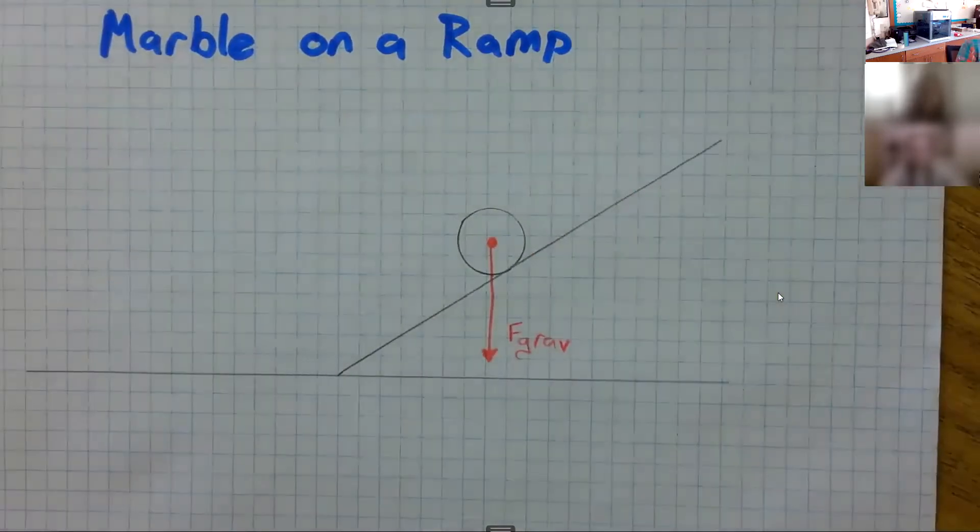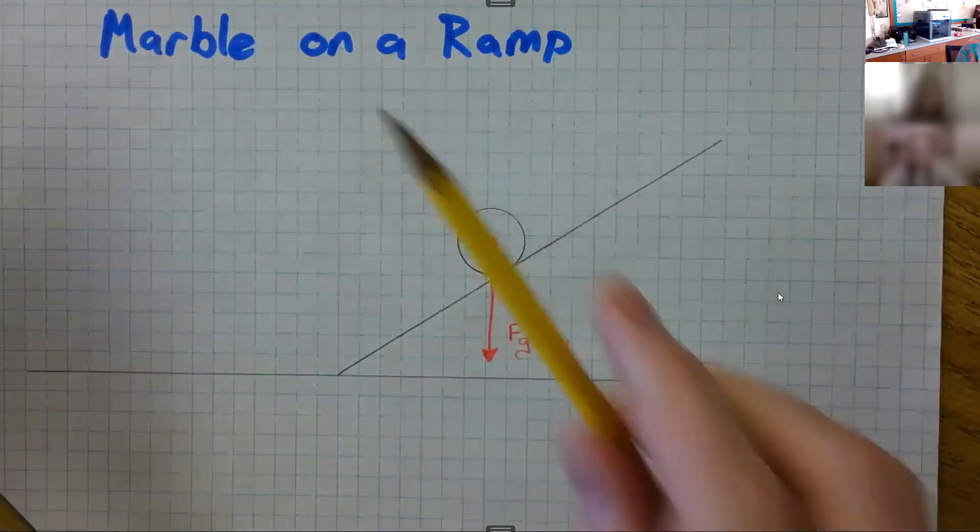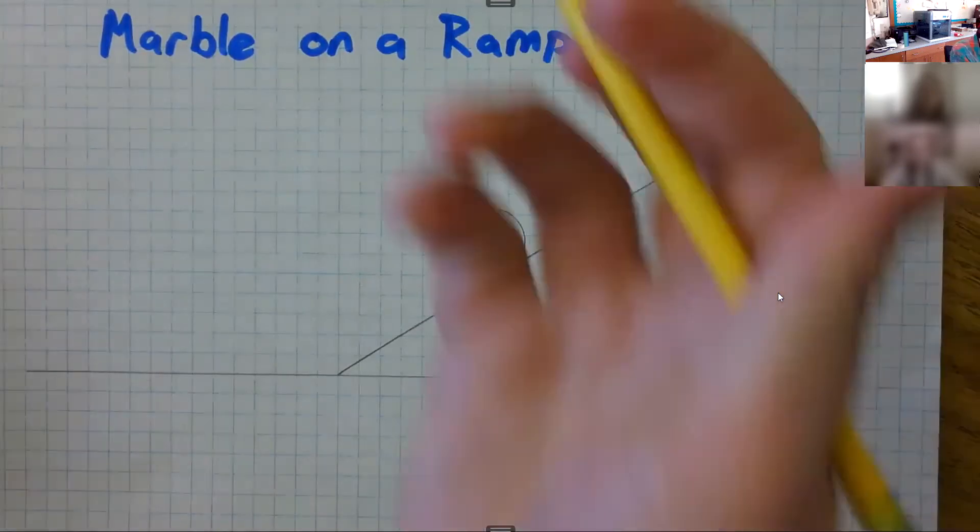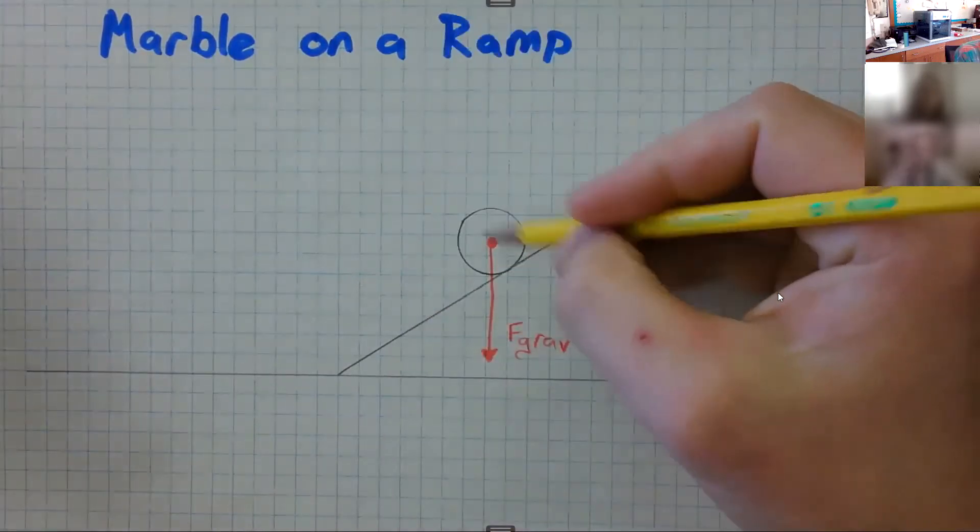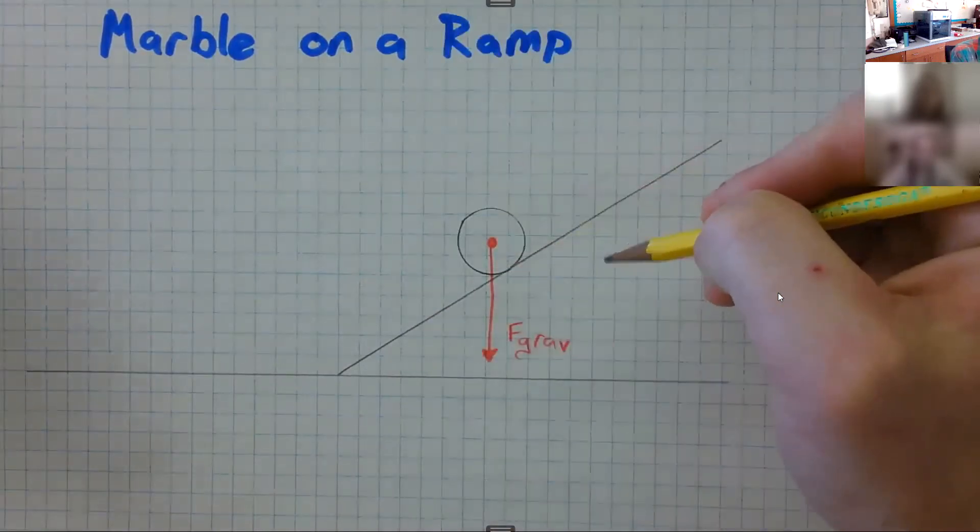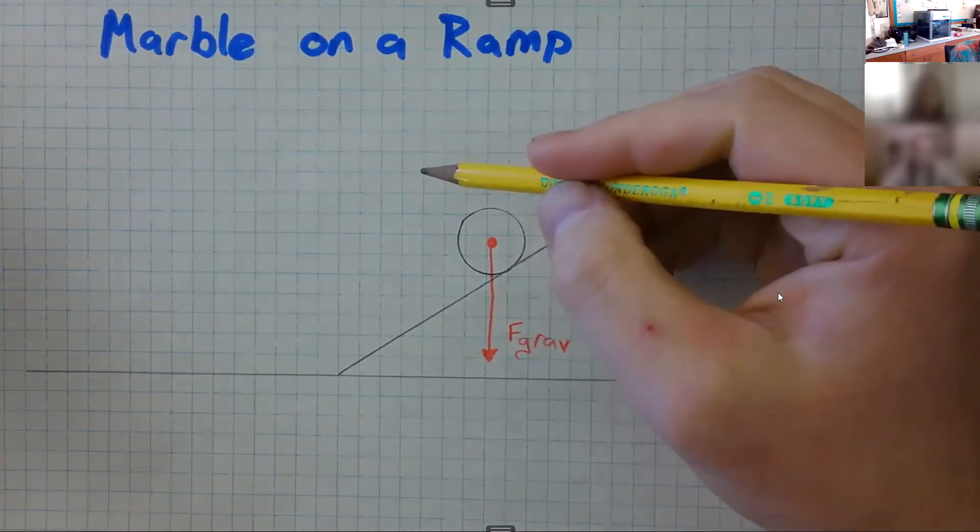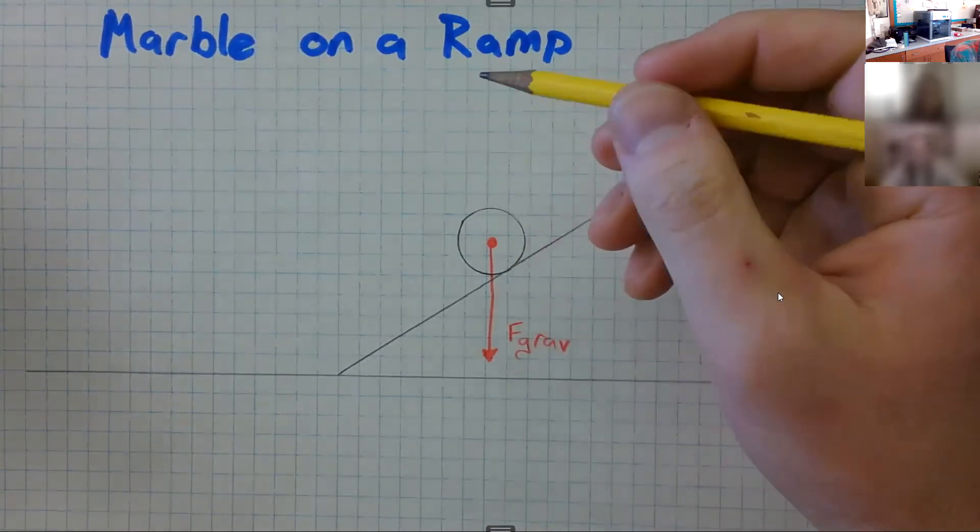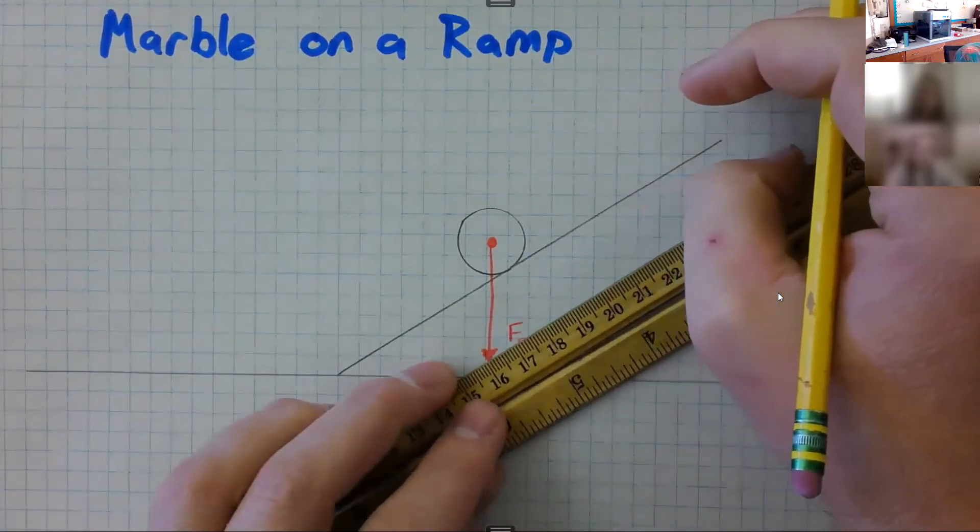And then there's the normal force. That's the force of the ramp pushing back against the marble, and that's at a right angle from the ramp.